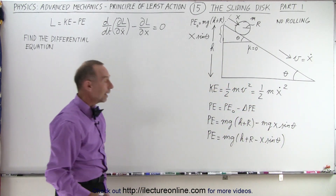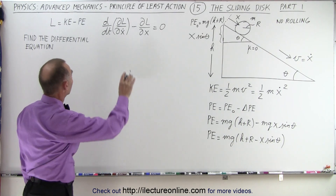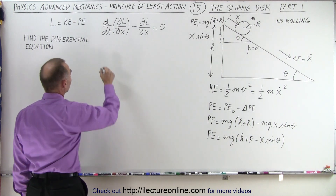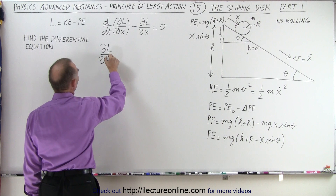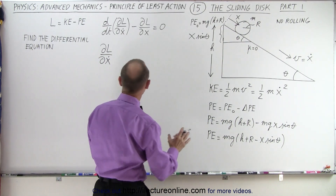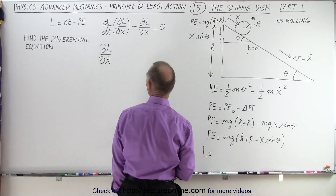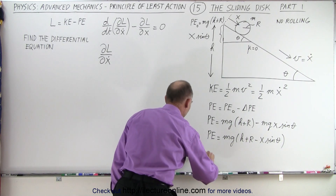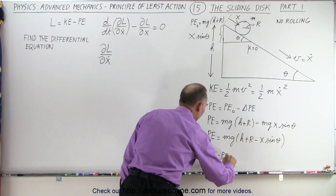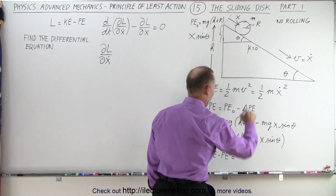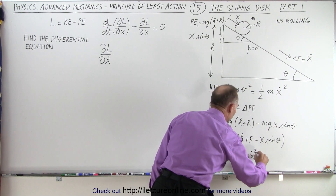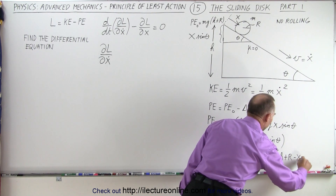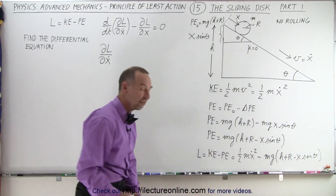Now I'm ready to write the Lagrangian. The Lagrangian is equal to the kinetic energy minus the potential energy. So it equals one-half m x-dot squared, minus mg times (h plus r minus x times sine of theta). Now that I have the Lagrangian defined, I can take the partial derivative with respect to x-dot.